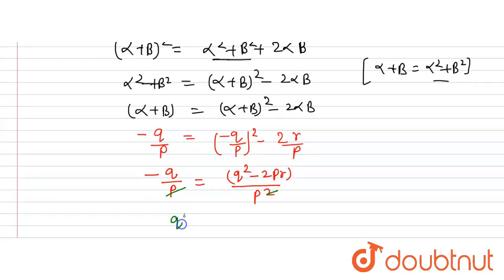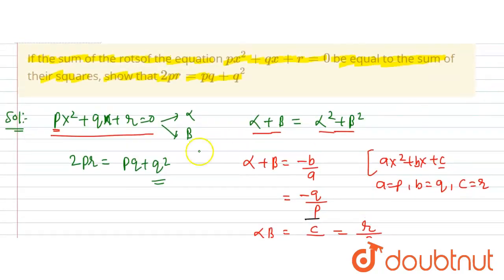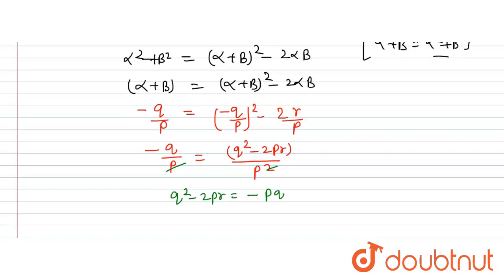Simplifying, we get q²- 2pr = -pq. Rearranging, 2pr = q² + pq. This is the same as 2pr = pq + q². Hence proved.